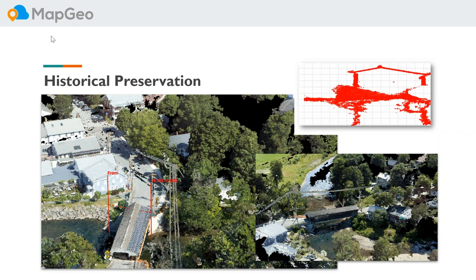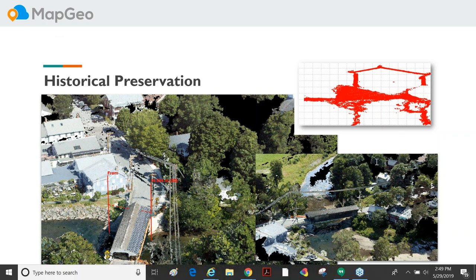Historical preservation — a great way to create digital 3D representations of valuable structures like this covered bridge that may be exposed to risk and destruction. If you need to rebuild it, you've got a full 3D model generated from about a 15-minute drone flight and a couple hours of processing. The model might not be used right now, but down the road it could be invaluable.